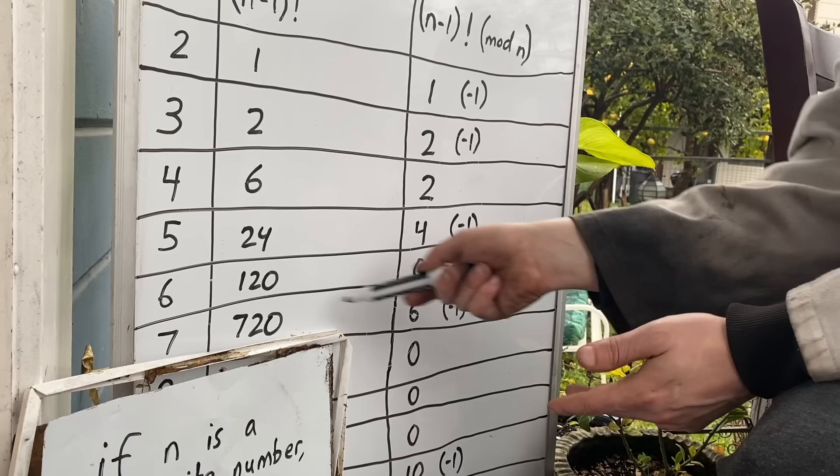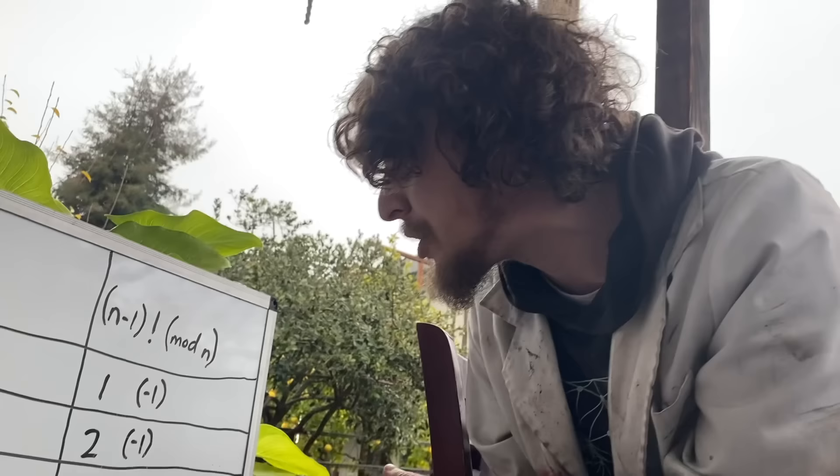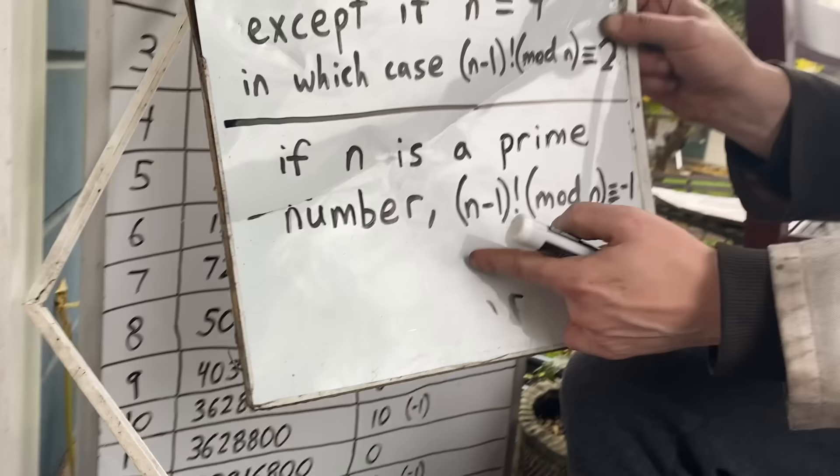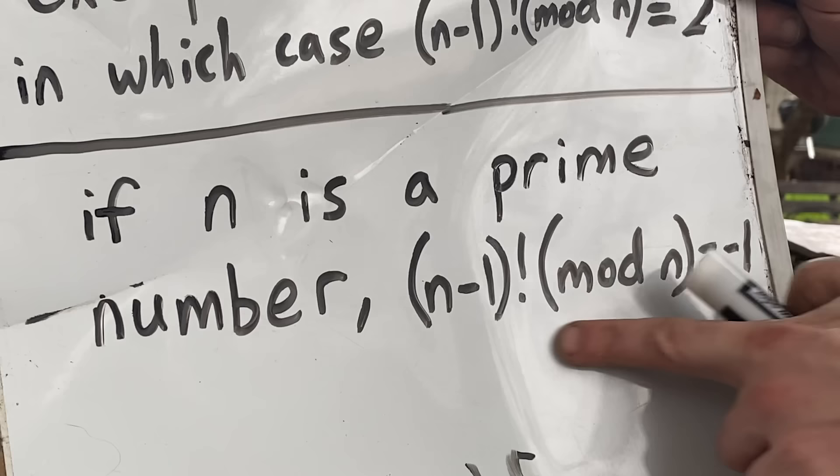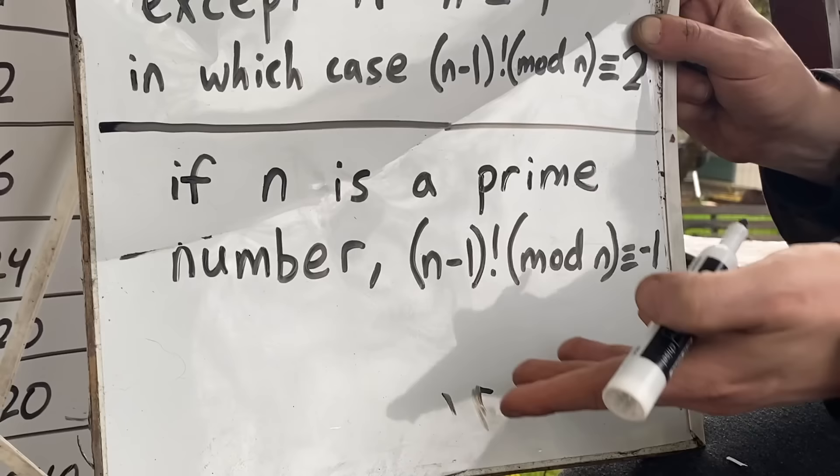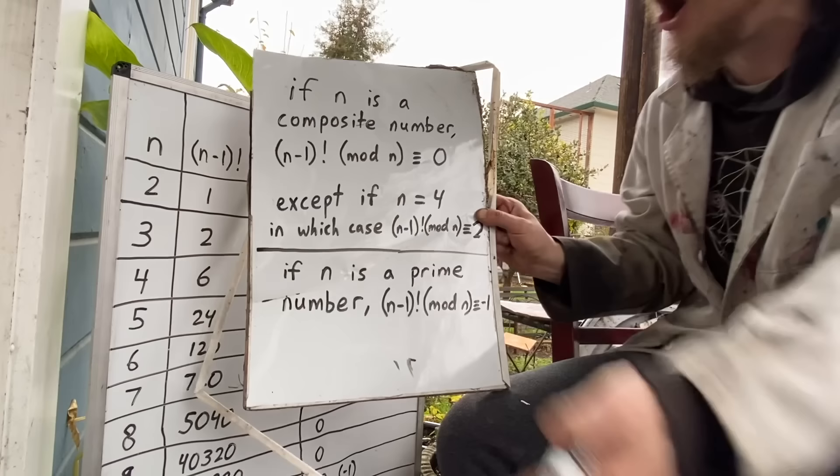And while the proof is a little more detailed and I'm not going to put the proof in this episode, it is true that for any prime number when we do that formula we'll end up congruent to negative one in that mod. And since any whole number greater than one is either composite or prime, this is basically an on or off switch, a detector for whether a number is prime or not.